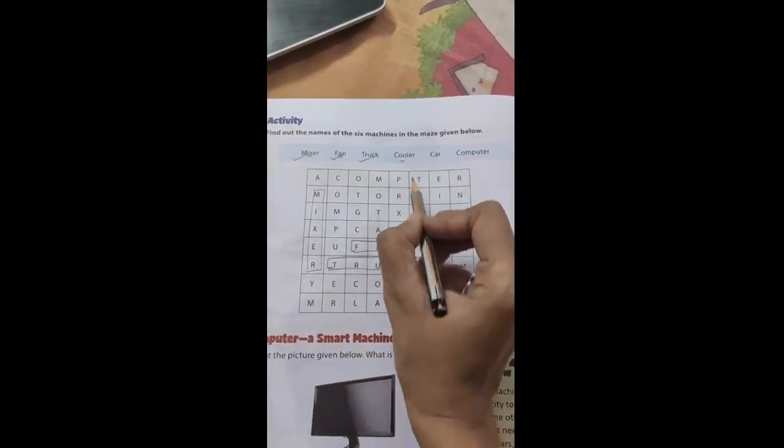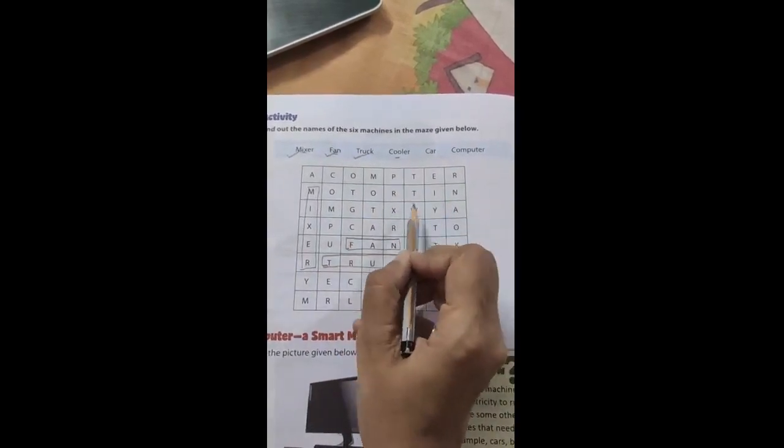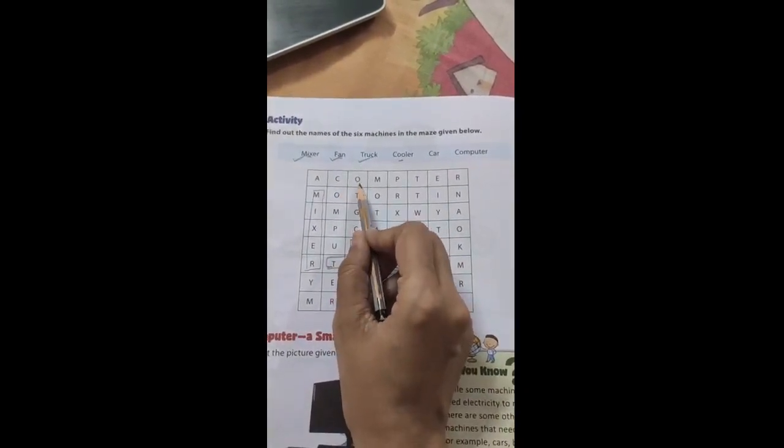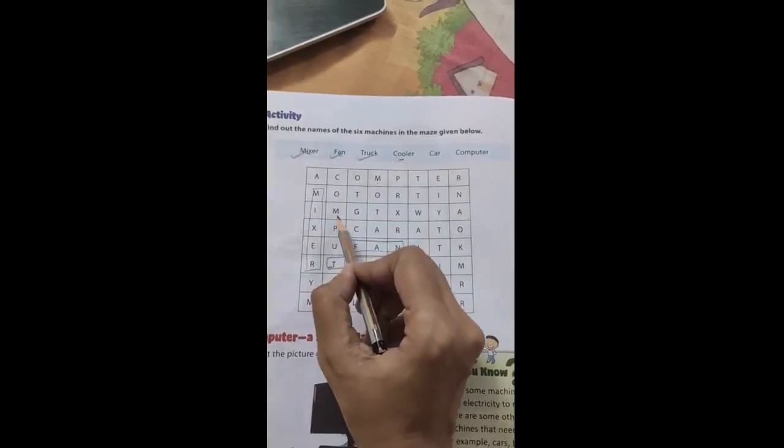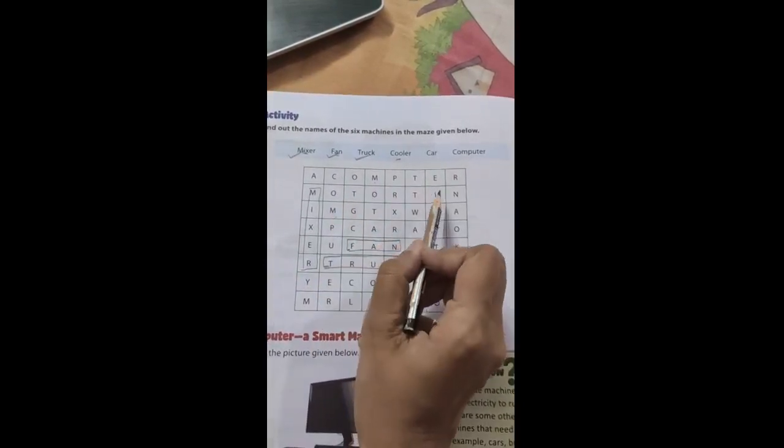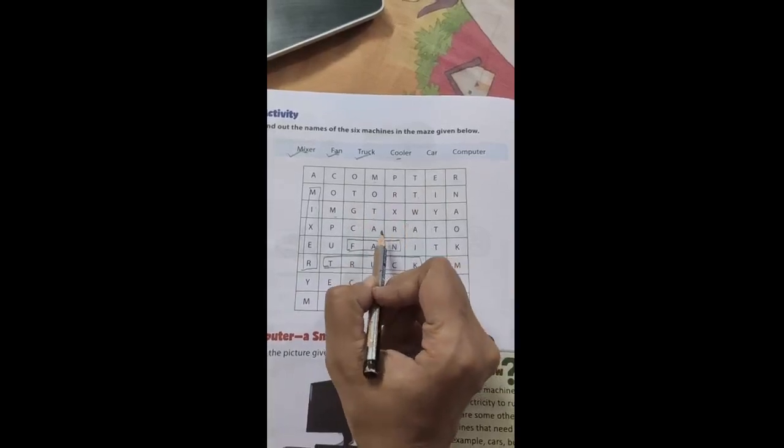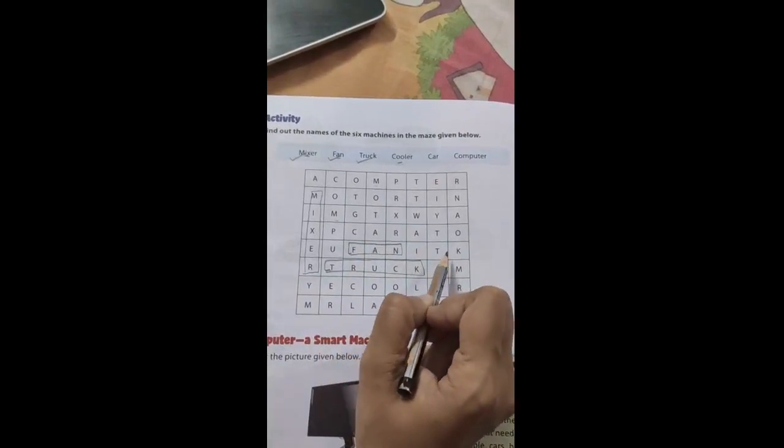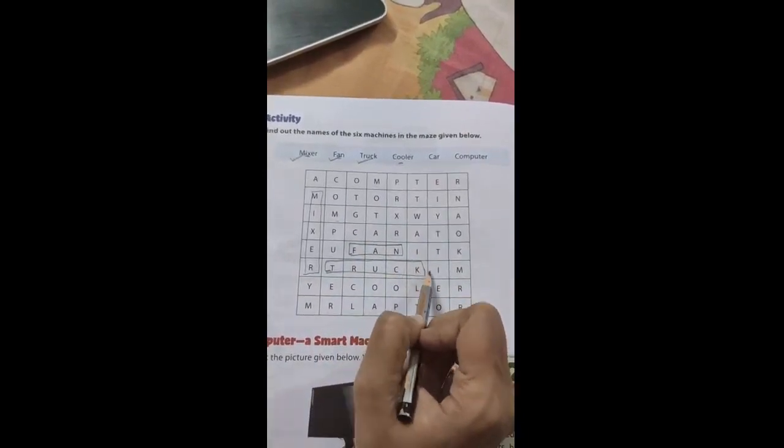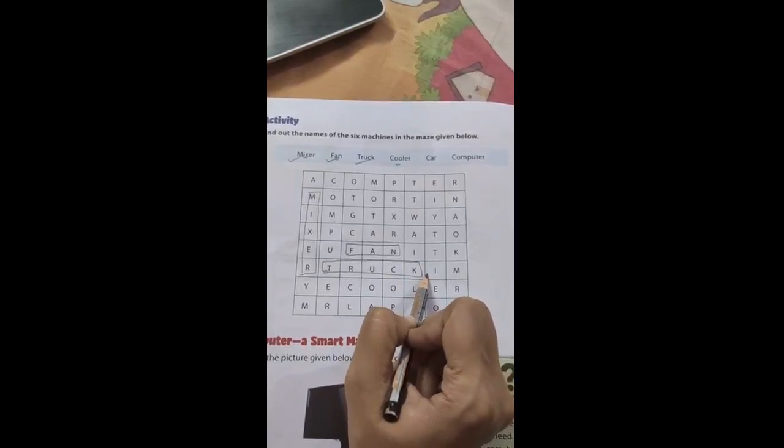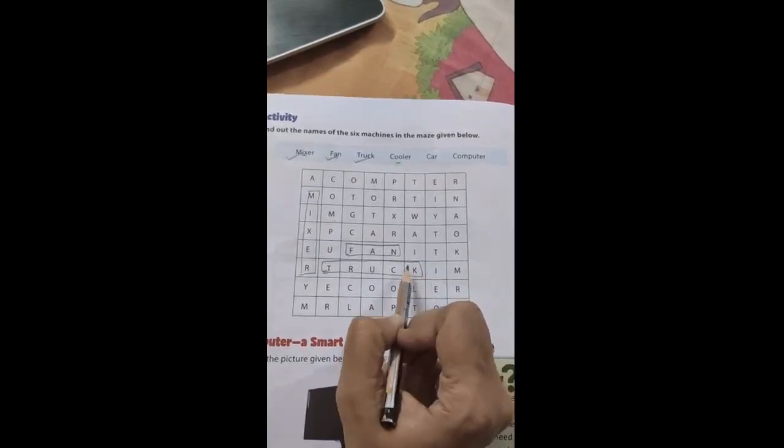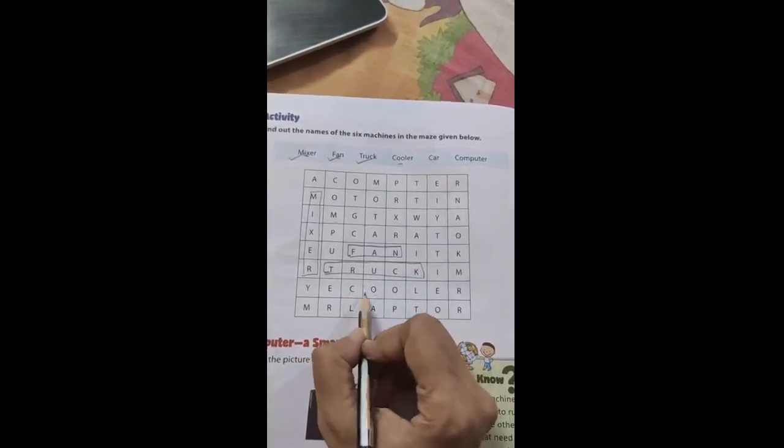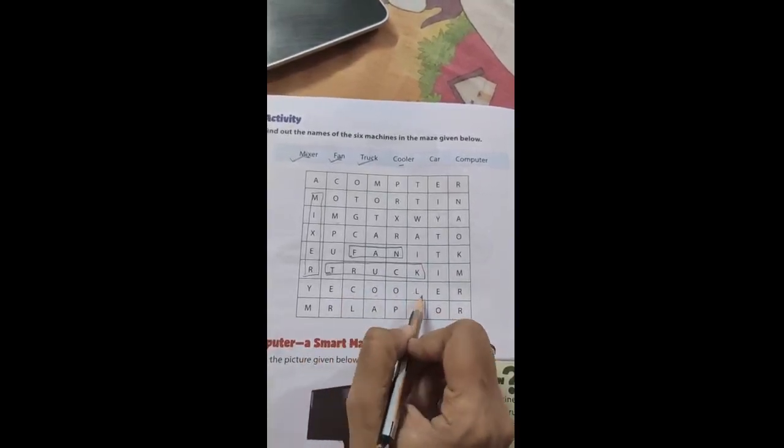Next is cooler. For cooler, let us find C in the maze. Where is C? Here is a C, but it is not having double O over here. Here also we are not getting double O. Next is again, if we find C. This is C, but here also we are not getting double O. Next if we got C, over here. But again there is no possibility. Now here, yes, here C is here. And here we are getting double O. Yes, we got the spelling. C double O L E R. Cooler.